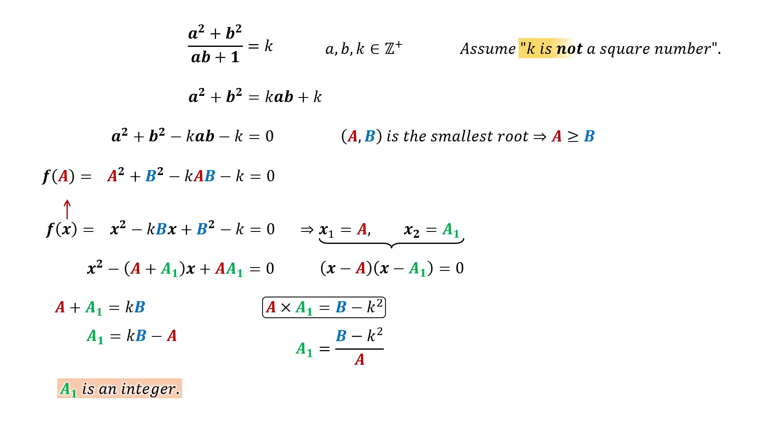By assumption, K is not a square number. The numerator B square minus K is not 0, meaning A1 is not 0.